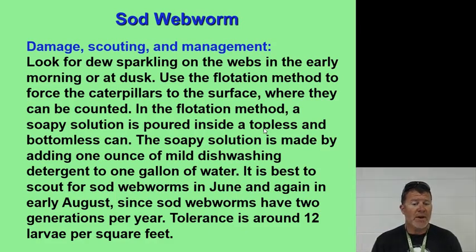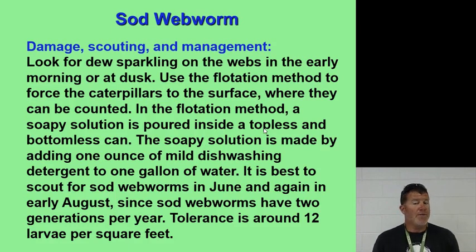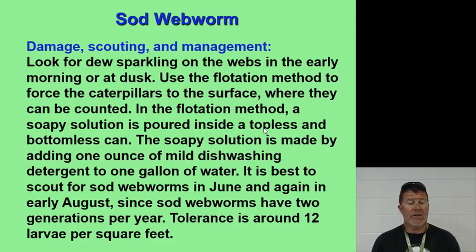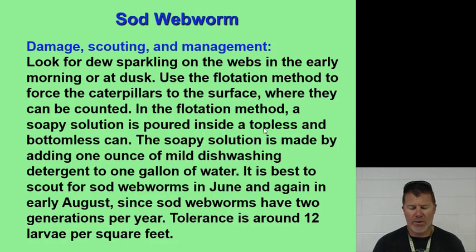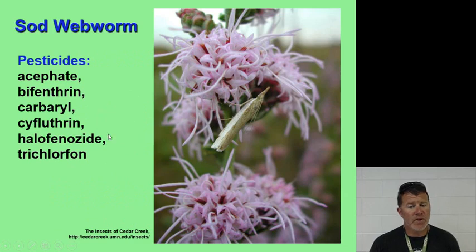The solution is made by adding one ounce of mild dish-washing detergent to one gallon of water. It's best to scout for sod webworms in June and again in early August — they have two generations per year. Pesticides include carbaryl, trichlorfon, bifenthrin, and others.